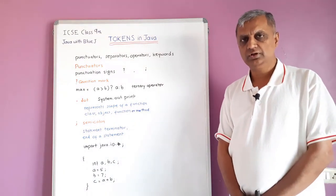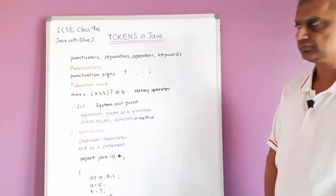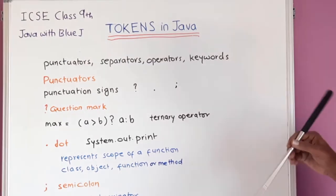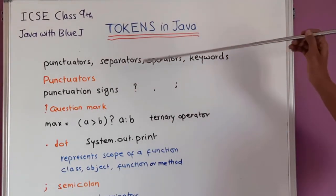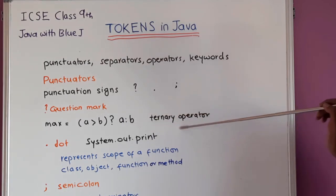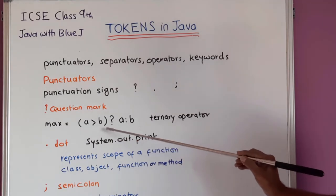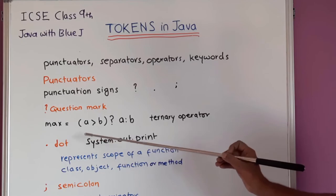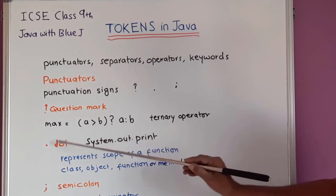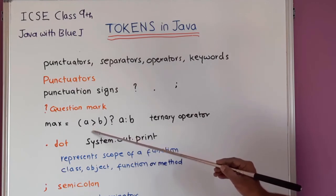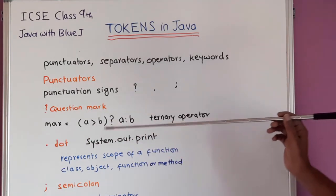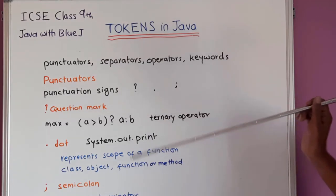We are studying tokens in Java. Let us look at punctuators, separators, operators, and keywords. The main punctuation signs we use are question mark, dot, and semicolon. The question mark is used inside a ternary operator — for example: 'max = (a > b) ? a : b'. If the condition on the left is true, max equals a; if false, max equals b. The dot is a punctuator — we use it in System.out.print or System.out.println, connecting the class, object, and method.